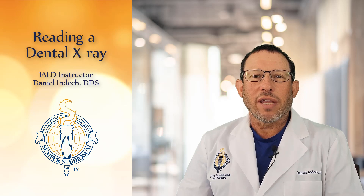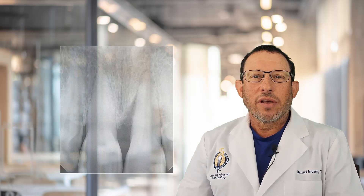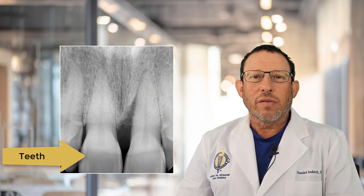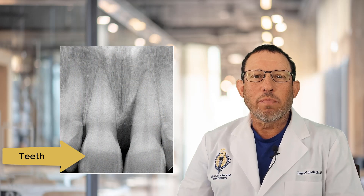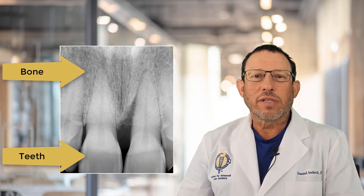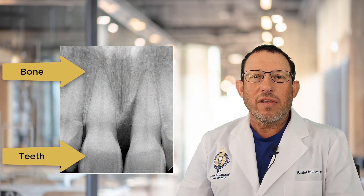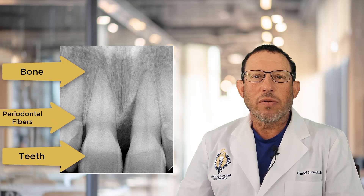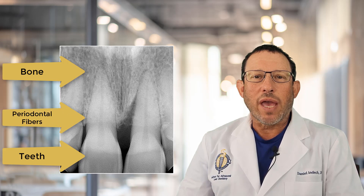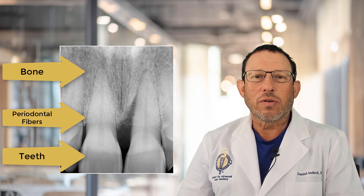Here's what we're looking at when we view your dental X-rays. These are the teeth, this is the bone that surrounds the teeth, and in this fine space between the bone and the tooth are the anchoring fibers that hold the tooth to the bone.